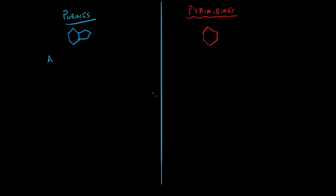So we're going to look at the two different types of purines first, which are adenine and guanine.